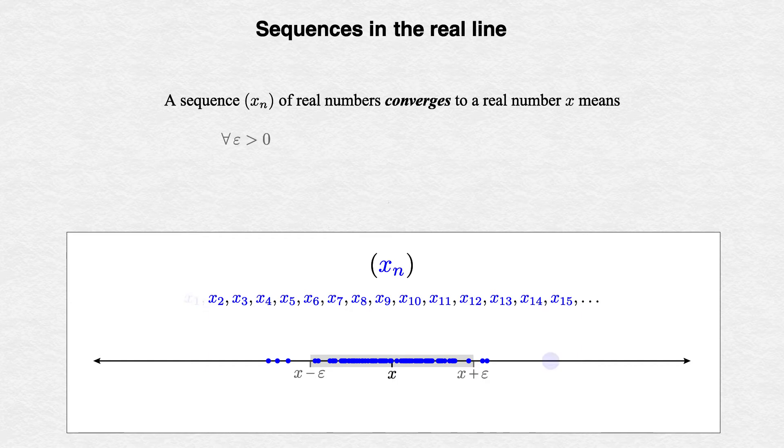With our target set, we need to toss out enough initial terms so that the rest all stay inside that target. We use capital N as the starting index for the terms that are left, and we say that there must exist some starting index. The hard work's now done.